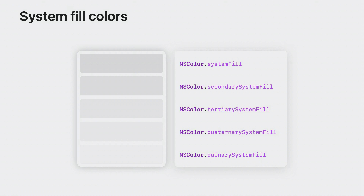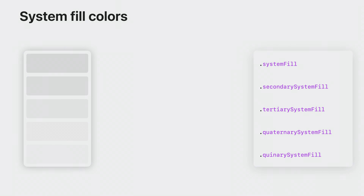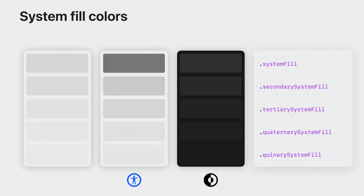NSColor now offers five new system colors for filling background shapes. The fill colors provide varying levels of emphasis for shapes of various sizes. Smaller shapes, on the scale of a slider track or a progress bar background, use a higher level of emphasis such as systemFill or secondarySystemFill. Larger shapes, like group boxes and form backgrounds, prefer a more subtle level such as quaternarySystemFill or quinarySystemFill. These fill colors are dynamic and automatically adapt to different appearances, including increased contrast and dark mode. If you're building custom UI elements, these new fill colors are a convenient way to fit in with the system design and support accessibility.